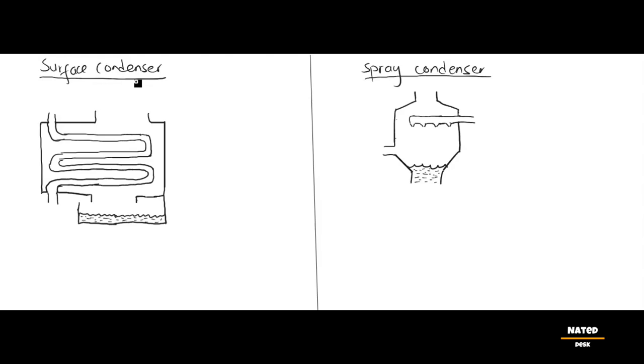In a condenser, having a vacuum means removing all the air and other gases from the inside, creating a space where there's nothing or almost nothing at all. This vacuum condition is important for the condenser because it allows it to work more efficiently.